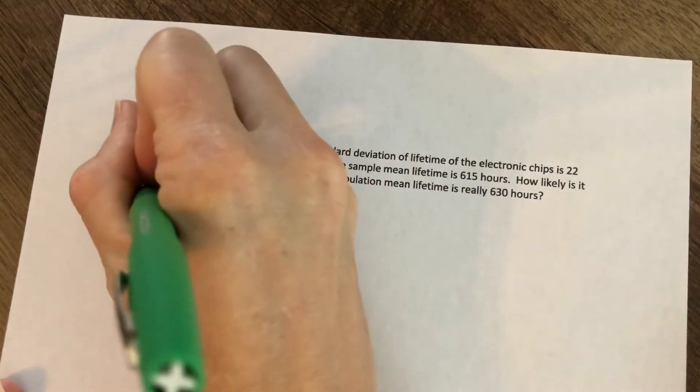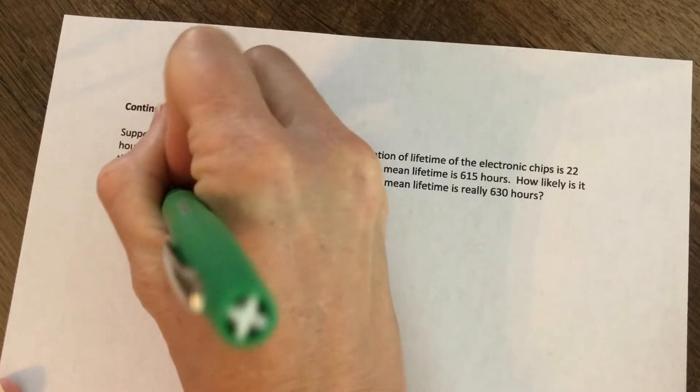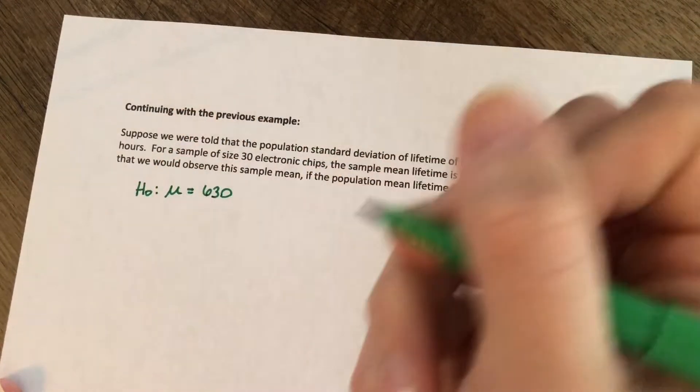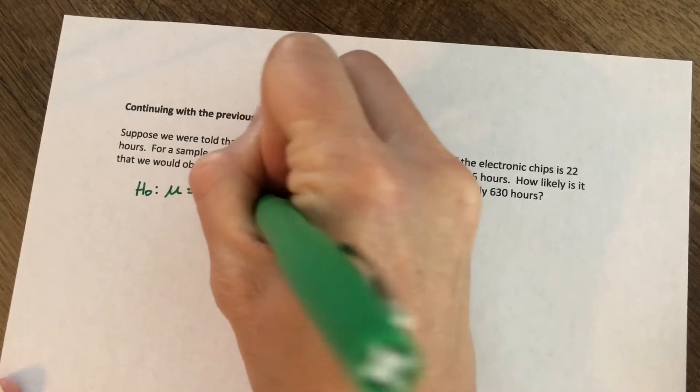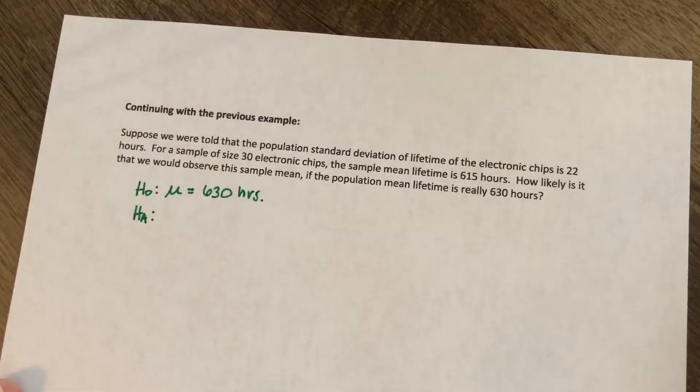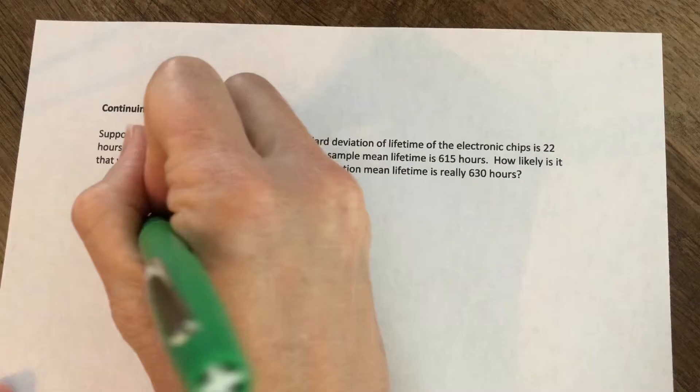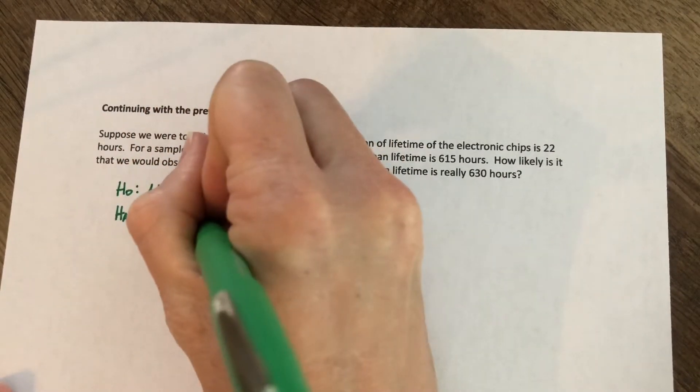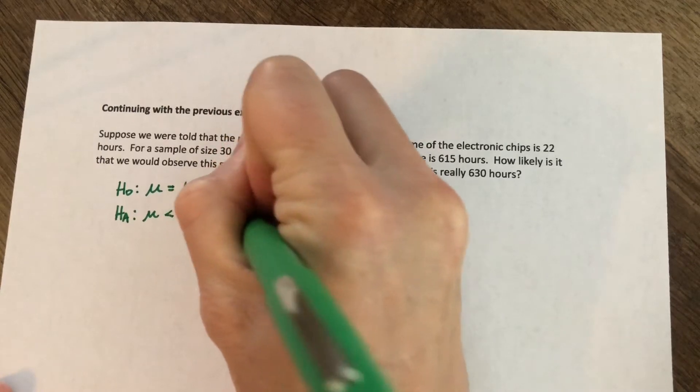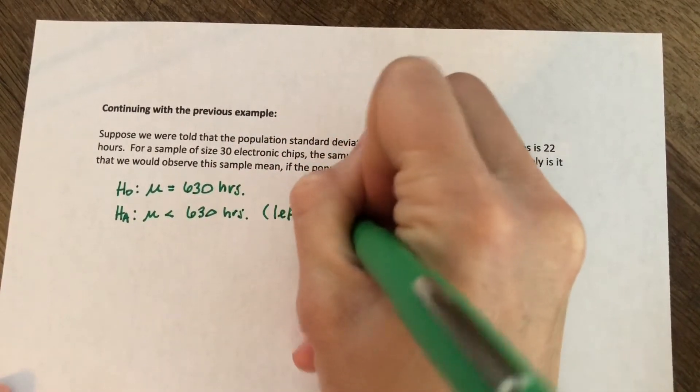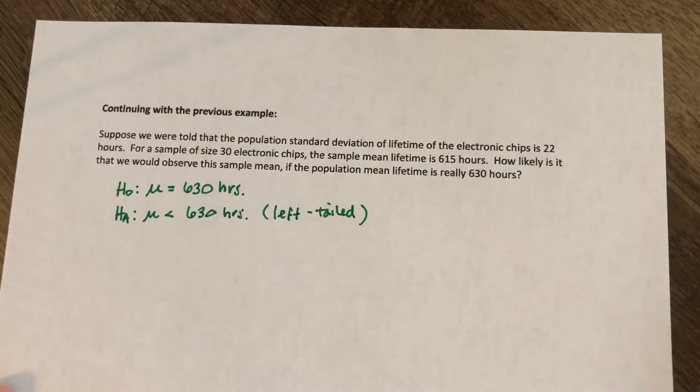So just as a refresher here, we had said our null hypothesis was that the mean length was 630 hours. And what we wanted to test as an alternative was that these chips were in fact on average not lasting 630 hours. So less than 630 hours would be a left-tailed alternative.